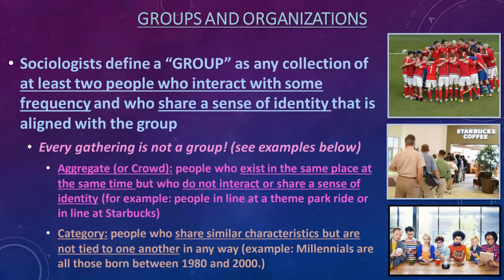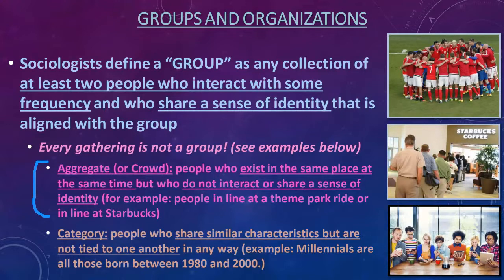Not every gathering is a group, sociologically speaking. Just because there's a bunch of people around doesn't necessarily mean all those people are part of a group. We might be looking at an aggregate instead — more commonly called a crowd. An aggregate or crowd is when people are in the same place at the same time, but they don't really care about each other, they don't have a shared sense of identity, they're not interacting with frequency, and once they leave they may never see each other again.